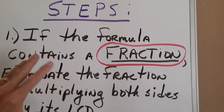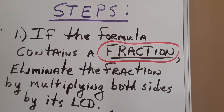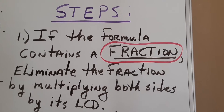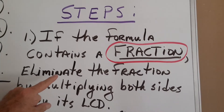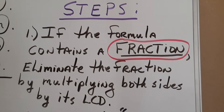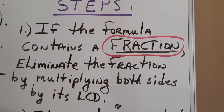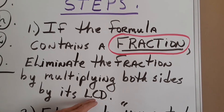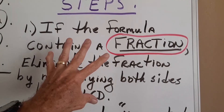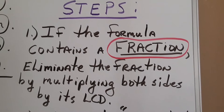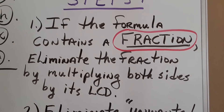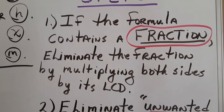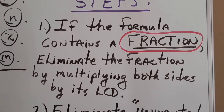Step one: if the formula that you are looking at contains a fraction, the very first thing that we do is eliminate that fraction by multiplying both sides of that formula by its LCD. The LCD will be whatever its denominator is. If the formula contains a fraction, we're going to eliminate that fraction — that is not 'if I feel like it,' that's a mandate, that's a must. We will eliminate the fraction by multiplying both sides of that formula by its LCD.